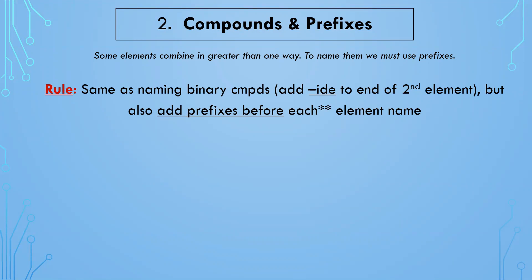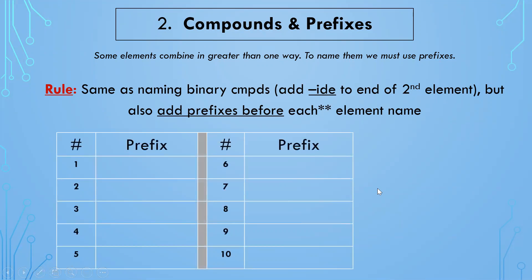Except now you may have to add a prefix before each element name. You're still dealing with two elements, but you have to look at the subscript because you need to know how many there are in order to add the appropriate prefix. Here's a list of prefixes you need to copy into your notes — you need to know prefixes one through ten.